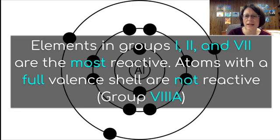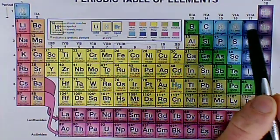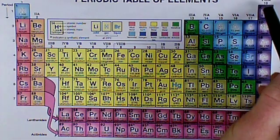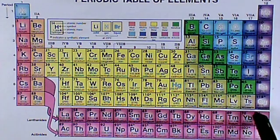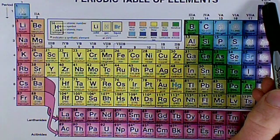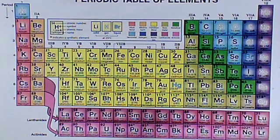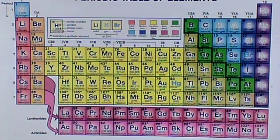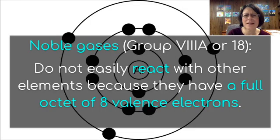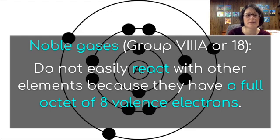Let's take a look at that group. Groups 1, 2, and 17 are the most reactive. Group 8A — we call them the noble gases. They have 8 electrons in their shell, so they are super stable and not very reactive at all. They do not easily react with other elements because they have a full octet of 8 valence electrons.